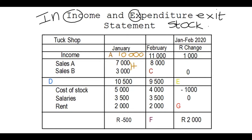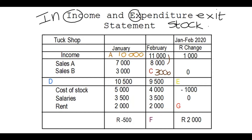That gives us the total income. Now let's look at February. We got 8,000 from Sales A, but we don't know the income from Sales B. We do know the total income in February was 11,000. So 8,000 plus what gives you 11,000? That helps us determine C, which is 3,000 — we just do 11,000 minus 8,000.